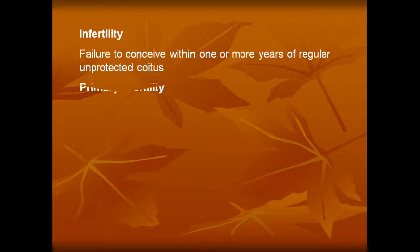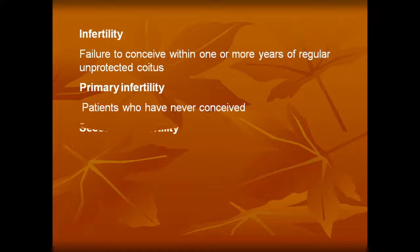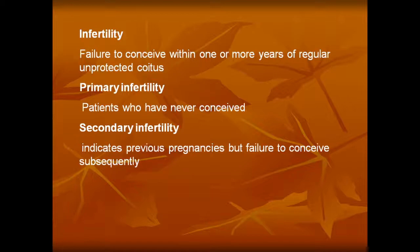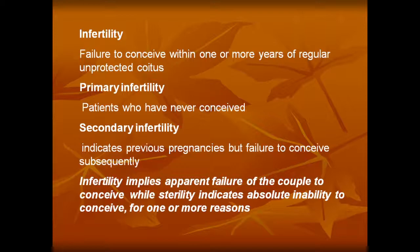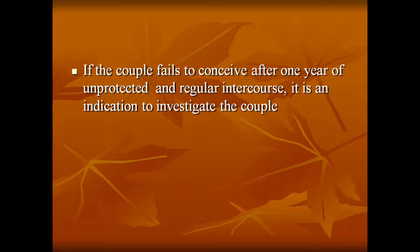There are two types of infertility: primary infertility and secondary infertility. Primary infertility means patients who have never conceived. Secondary infertility indicates she has become pregnant before but failure to conceive subsequently. Infertility implies apparent failure of the couple to conceive, while sterility indicates absolute inability to conceive for one or more reasons — so infertility and sterility are not the same.